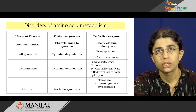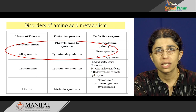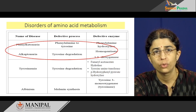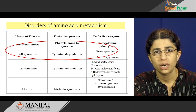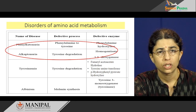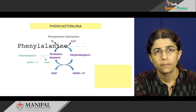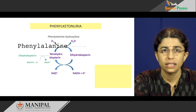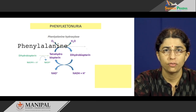Let us quickly go through the disorders of amino acid metabolism. These are some of the amino acid metabolisms in which the defective enzyme has been identified, which has led to the clinical manifestation of the disease. Phenylketonuria and Alkaptonuria are the most common ones. Alkaptonuria was the first one that was described by Dr. Archibald Garrod. In phenylketonuria, we have an enzyme defect in phenylalanine metabolism. Here we have a slide which shows the metabolism of phenylalanine.